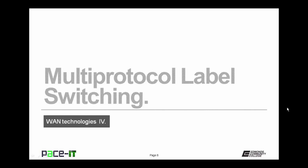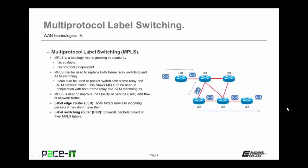Let's conclude with multi-protocol label switching. The acronym is MPLS. MPLS is a topology that's growing in popularity because it's scalable and protocol independent. MPLS can be used to replace both frame relay switching and ATM switching, and can be used to packet switch both frame relay and ATM network traffic. MPLS is often used to improve quality of service and flow of network traffic. It uses a label edge router to add MPLS labels to incoming packets if they don't have them, then passes those packets onto a label switching router, or LSR router, which forwards the packets based on their MPLS labels to their final destination.